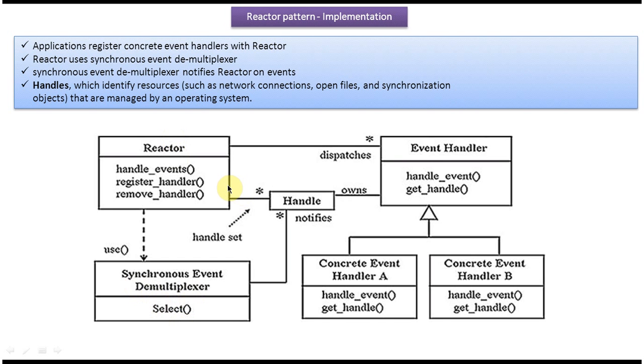Then this Reactor, what it will do is based on the event type, it will identify which event handler can handle the event. So in this case there are two event handlers: Event Handler A and Event Handler B. So once Synchronous Event Demultiplexer notifies event to the Reactor, it will identify that particular event handler.